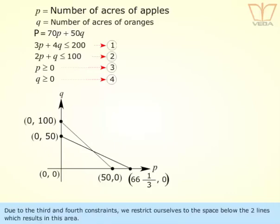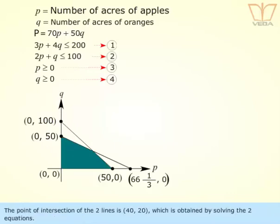Due to the third and fourth constraints, we restrict ourselves to the space below the two lines which results in this area. The point of intersection of the two lines is (40, 20), which is obtained by solving the two equations.